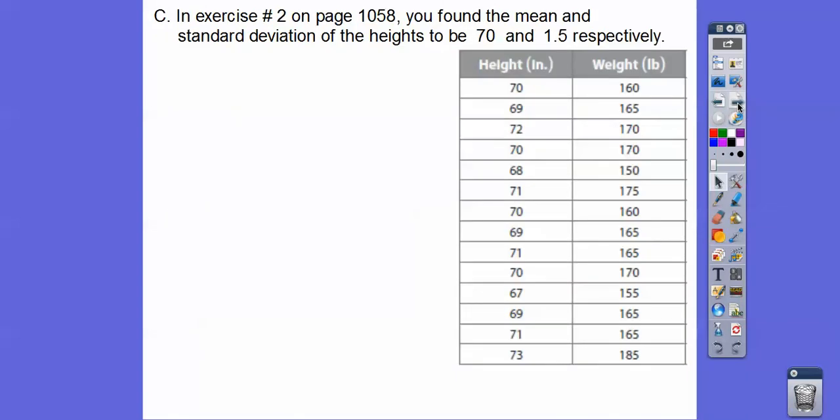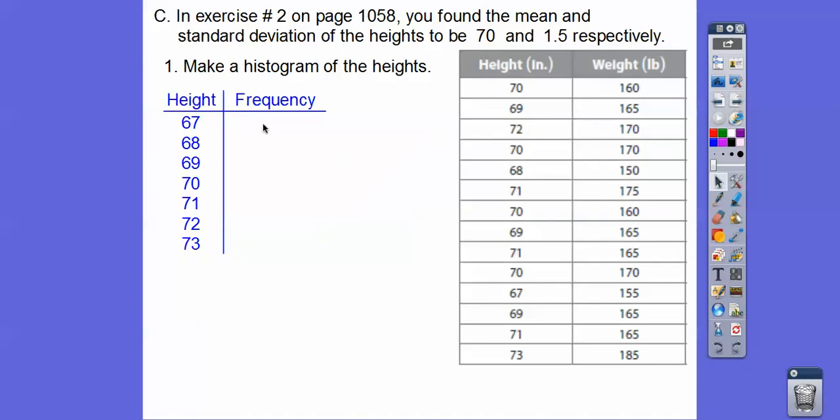All right, so in exercise 2 of our homework sections, we did number 2 on page 1058. We found the mean and standard deviation of the heights to be 70 and 1.5, respectively. So we found the mean of these and the standard deviation. So let's make a histogram of those heights. We're going to use this standard deviation in just a bit. Let's do a frequency table first. Before I can do a histogram, I've got to do this frequency table. So there's one 67, one 68, one 69, four 70s, three 71s, one 72, and one 73.